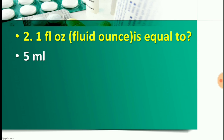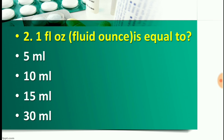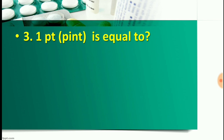Question number two: One fluid ounce is equal to — Option A: 5 ml, Option B: 10 ml, Option C: 15 ml, or Option D: 30 ml. The right answer for this question is Option D — 30 ml. So one fluid ounce is equal to 30 ml.